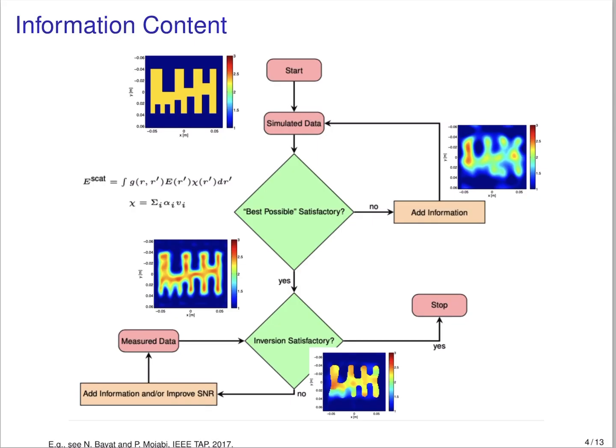Let us now focus on the information content of the data. We need to have a mechanism to ensure that the inversion process has a chance to succeed in reconstructing the details of interest. For microwave imaging, this is quite complicated as the required information content depends on the complexity of the target, and of course the target is unknown. One way to handle this issue is to create a simulated known target whose overall properties are similar to the actual target, and then find the induced total field within the simulated target.